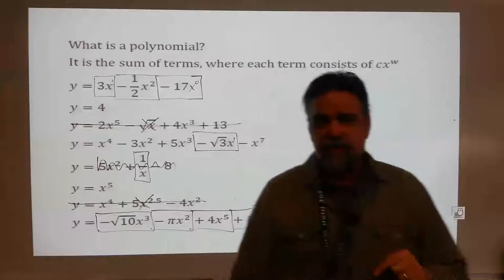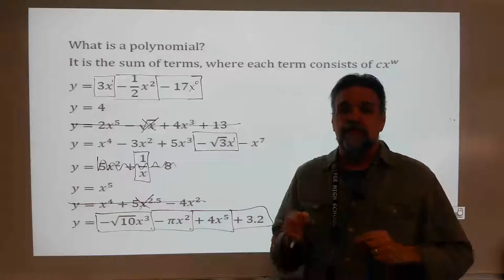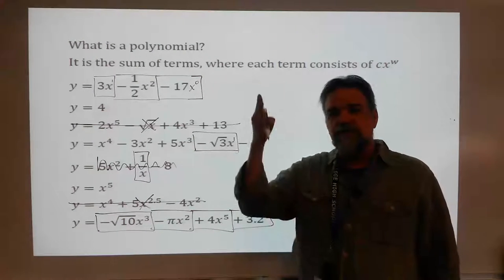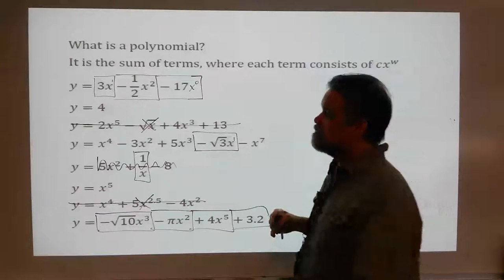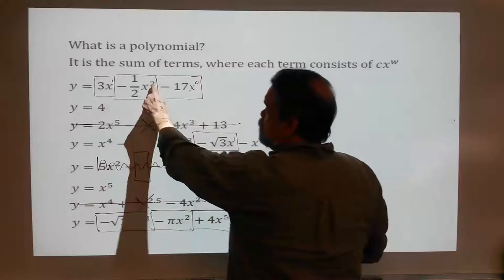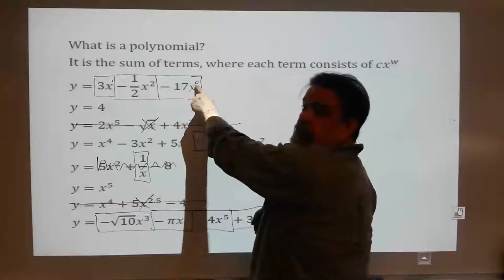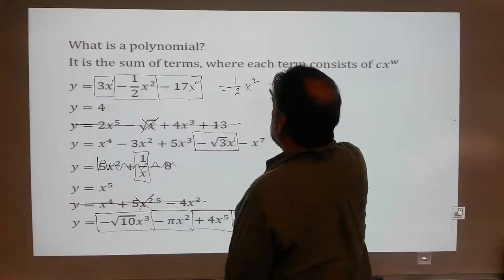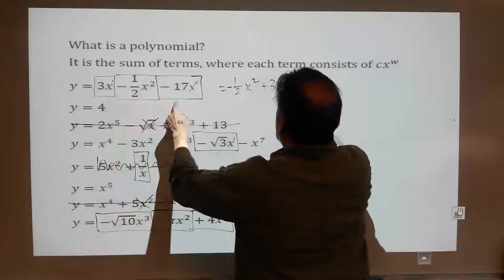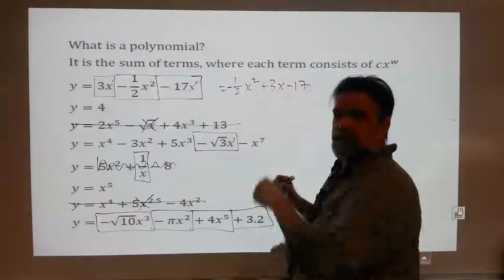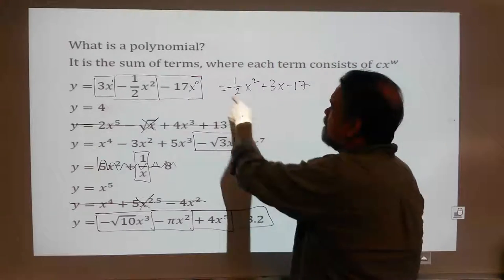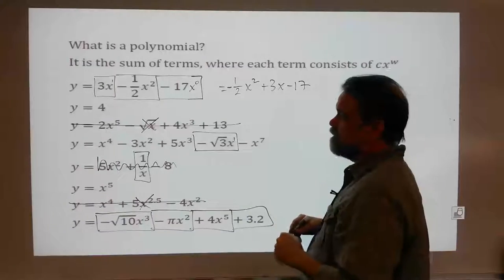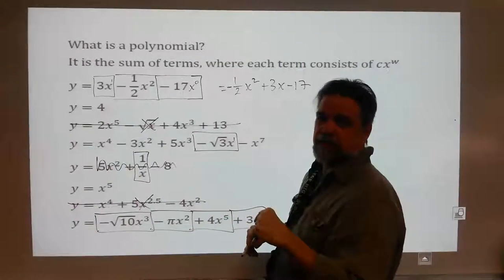Every polynomial can be written in what is called standard form, and I strongly recommend that you write your polynomials in standard form. Standard form is easy to do — all you have to do is make the exponents go down in descending order. The exponents: 2, 1, 0. So this is going to be negative one-half x squared plus 3x minus 17.